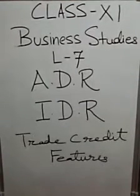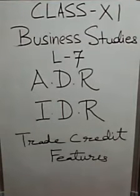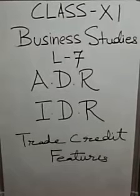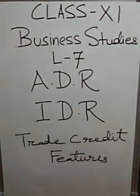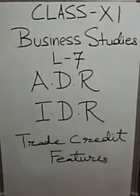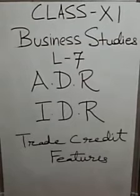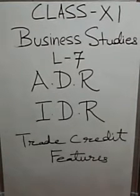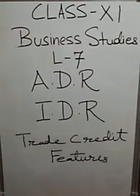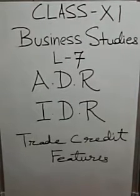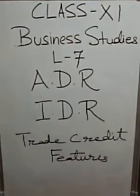Now let's study the features of trade credit. First, readily available — trade credit is available without any special efforts on the part of the manufacturer or trader, meaning it is easily available. Second, flexible — there are no rigid rules and regulations involved in trade credit; it can be easily adjusted with the changing needs of purchase, as time of payment is generally adjusted in view of past dealings. Third, no flotation cost — no flotation cost is involved in arranging trade credit.